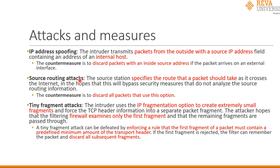In source routing attacks, the source itself establishes the path from source to destination for quality of service reasons. An intruder exploits this mechanism by specifying a route through the internet, hoping to bypass security measures that do not analyze source routing information. The countermeasure is to discard all packets that use source routing options.